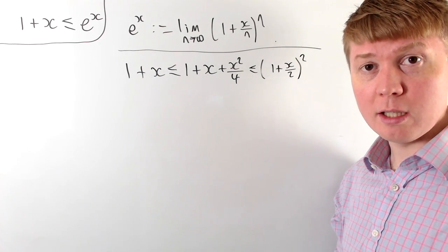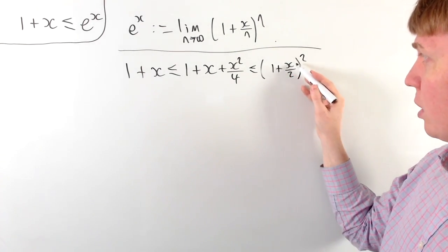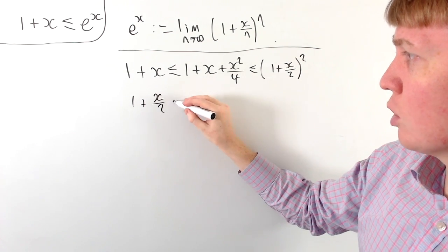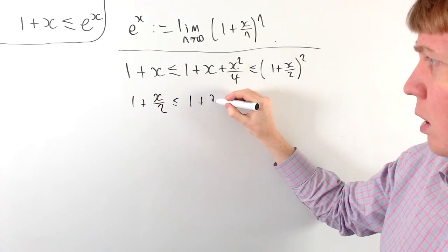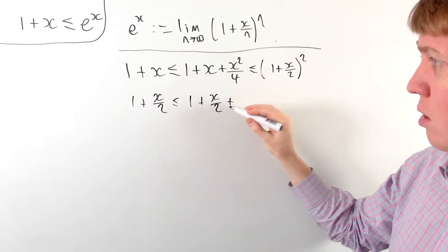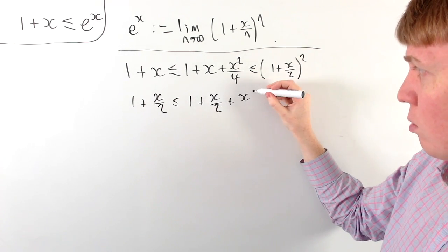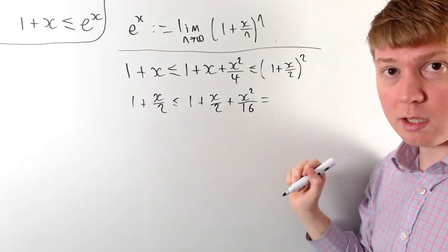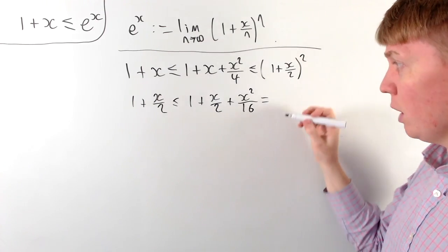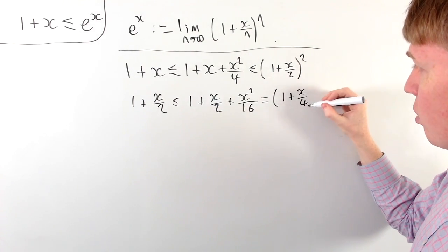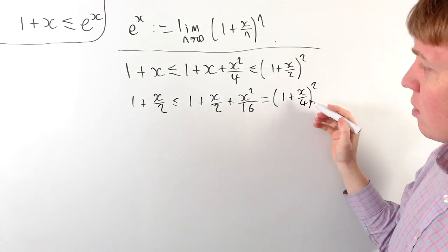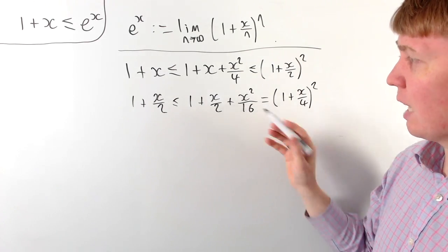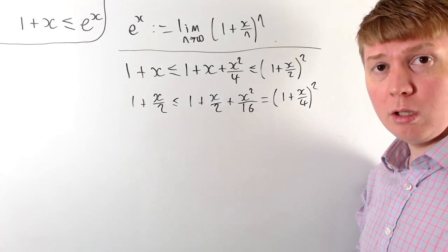The next step is to apply the same procedure to the 1 plus x over 2 term inside the bracket. So 1 plus x over 2 is less than or equal to 1 plus x over 2 plus x squared over 16. The reason we choose 16 is so that when we factorise, we get 1 plus x over 4 all squared — expanding gives back 1 plus x over 2 plus x squared over 16.